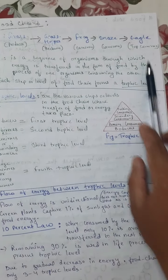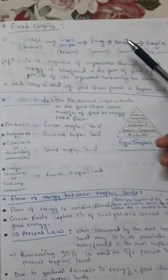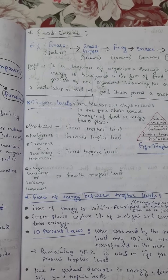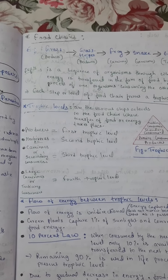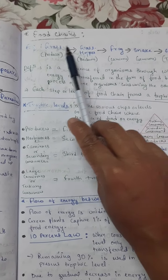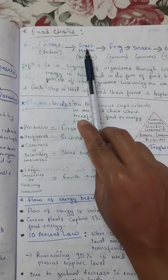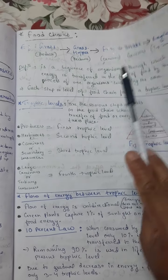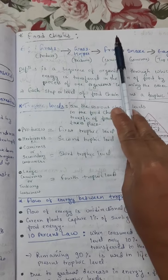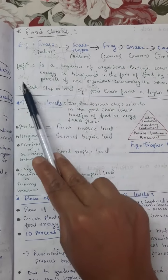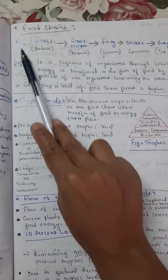We can define food chain like this: it is a sequence of organisms through which energy is transferred in the form of food by the process of one organism consuming the other — this forms a food chain. Each step in a food chain forms a trophic level (T-R-O-P-H-I-C). Trophic levels are the various steps or levels in the food chain where transfer of food or energy takes place.